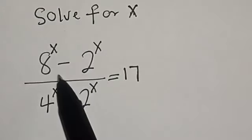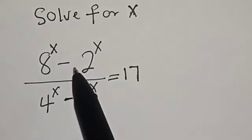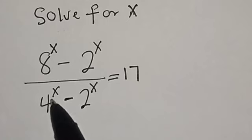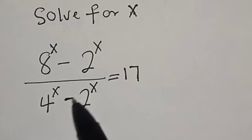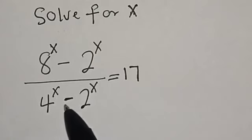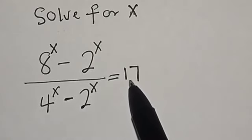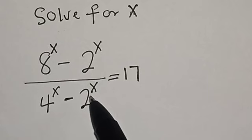Solve for x. 8 raised to power s minus 2 raised to power s, divided by 4 raised to power s minus 2 raised to power s, is equal to 70.